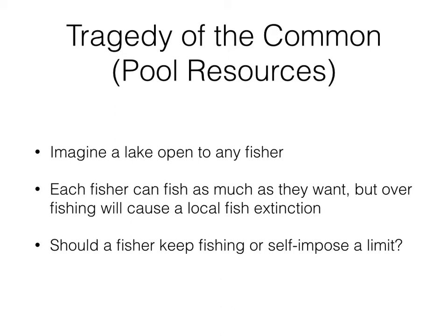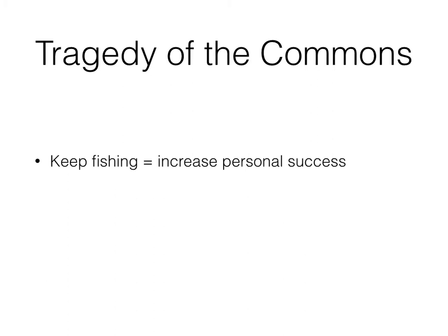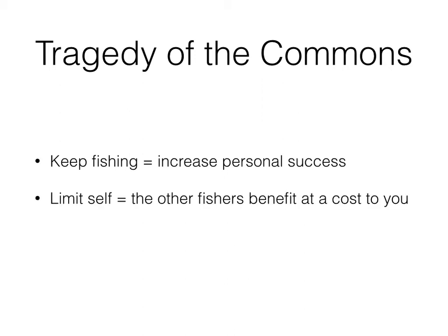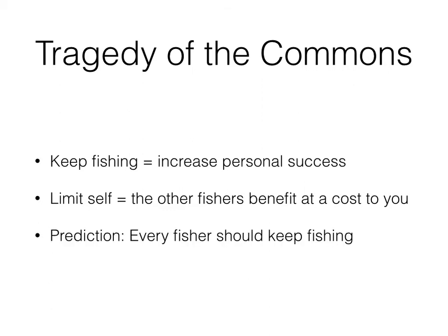You can see how this looks like the prisoner's dilemma — do you cooperate or defect? You have two options: you can keep fishing, increase your personal success, feed your family, make money. Or you can limit how many fish you take. However, the more you limit yourself, the more fish are left for other fishers who are making money and feeding their families. So if you impose a limit, the other fishers benefit at a cost you've imposed on yourself. The prediction is that every fisher should keep fishing, and if every other fisher keeps fishing, there's absolutely no reason for you to limit your take as well.